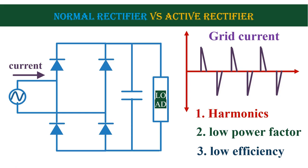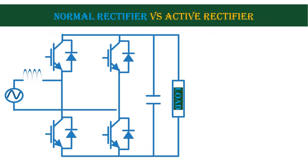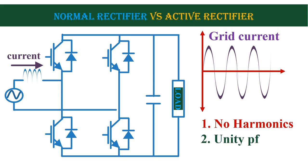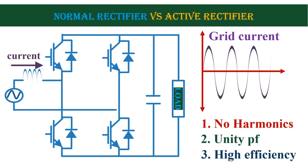To avoid all these issues, we use an active rectifier. Instead of diodes, here we use MOSFET or IGBT. We also use an inductor which is connected in series with the grid. The major advantage of this circuit is that the current drawn from the grid is pure sinusoidal, so there are no harmonics generated by this circuit. Also, we can achieve unity power factor. Since the voltage drop across the MOSFET is less compared to the diode, the losses are minimum, so we can get higher efficiency.